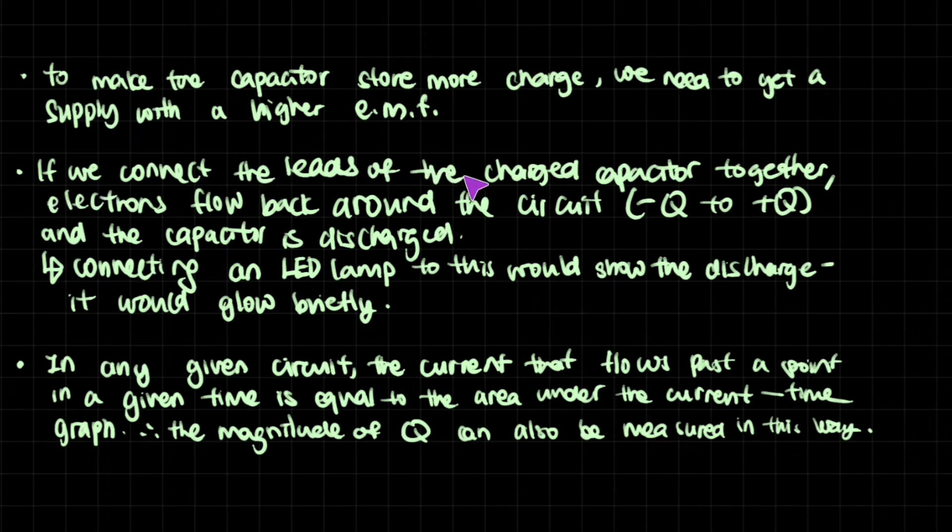Now, if you connect the leads of the charged capacitor together, just like I did with the lamp, essentially, the lamp isn't any sort of battery or cell. It's just like connecting the leads together. Electrons will flow back around the circuit from negative to positive. Remember that protons can't move. It's the electrons that are moving. And the capacitor is discharged. That is the terminology for it.